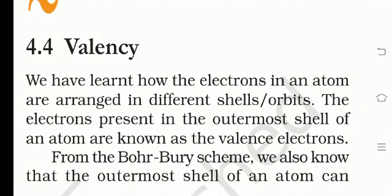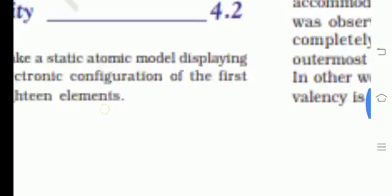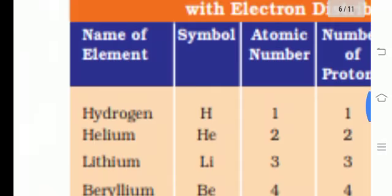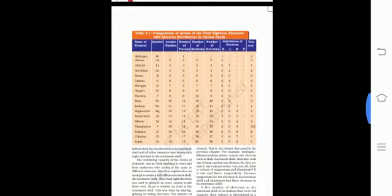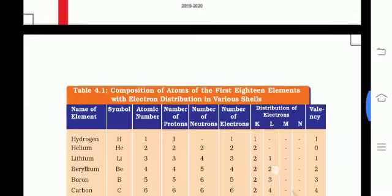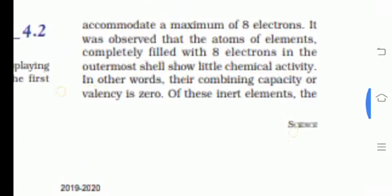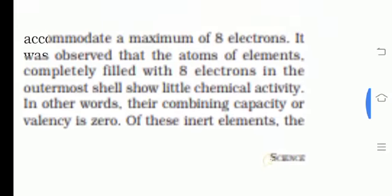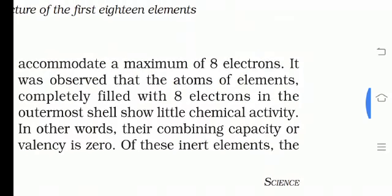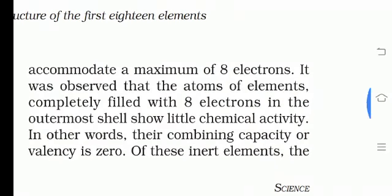From the Bohr-Bury scheme, we may also know that the outermost shell of an atom can accommodate a maximum of 8 electrons. Bohr se humein pata chala hai ki outermost shell mein maximum 8 electrons ho sakti hai.